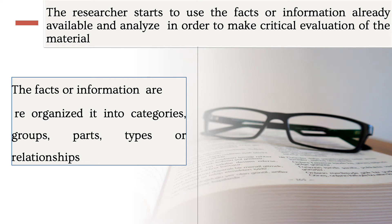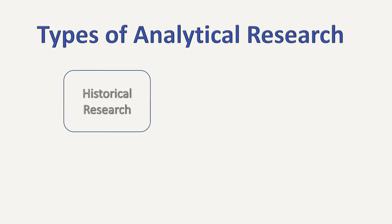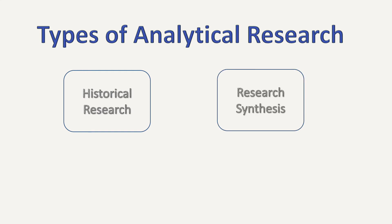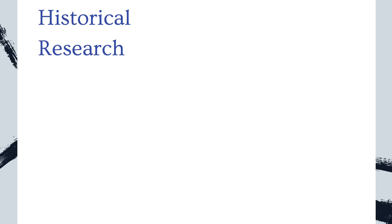The facts or information are then reorganized into categories, groups, parts, types, or relationships. What are the types of analytical research? There are four types: historical research, research synthesis, research science, and reviews.